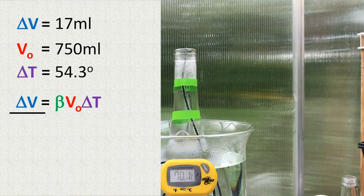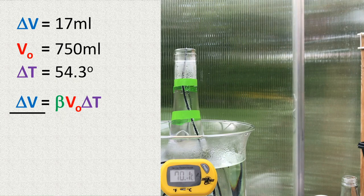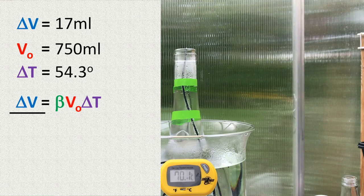Okay, here are the three things that we know. The volume change is 17 milliliters. The starting volume was 750 milliliters. The temperature change is 54.3 degrees Celsius. And here's our equation.